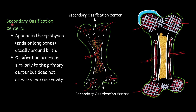Secondary ossification centers appear in the epiphyses — the ends of long bones. Ossification proceeds similarly to the primary center but does not create a marrow cavity. Instead, you find bony trabeculi filled with red bone marrow.